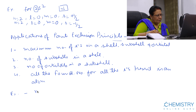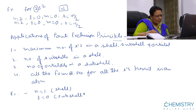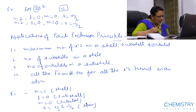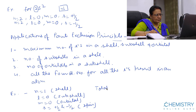Suppose if N is 1, this indicates the shell. L is 0 — this value indicates the subshell. If L is 0, then M is 0, and the value of M indicates the orbital. S is plus half or minus half — this quantum number indicates the spin of the electron. The total number of electrons in the first shell is equal to 2.